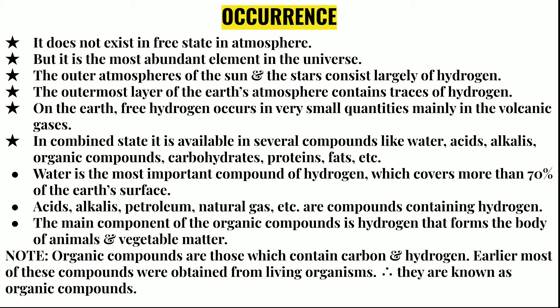In the combined state, hydrogen is available in several compounds like water, acids, alkalis, organic compounds, carbohydrates, proteins, fats, etc. Water is the most important compound of hydrogen, covering more than 70% of the earth's surface. Acids, alkalis, petroleum, and natural gas are also compounds which contain hydrogen. The main component of organic compounds is hydrogen, and organic compounds form the body of animals and vegetable matter.